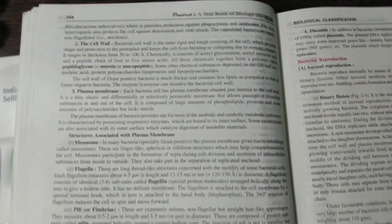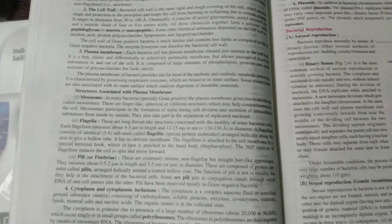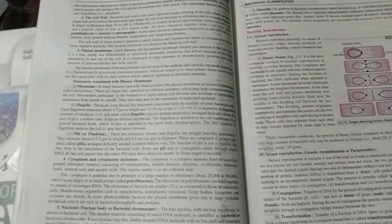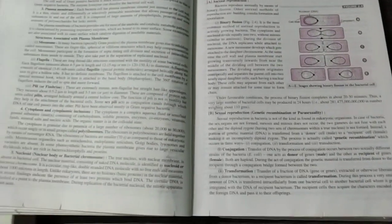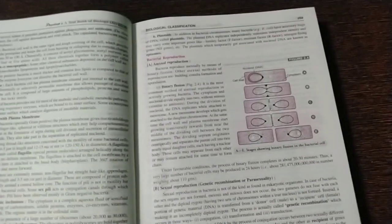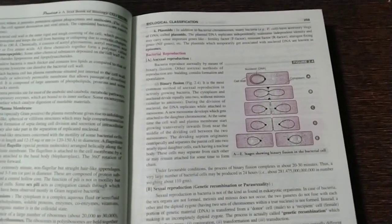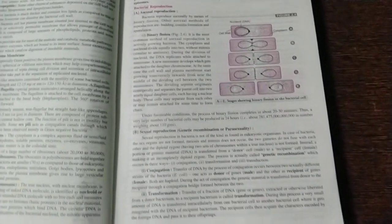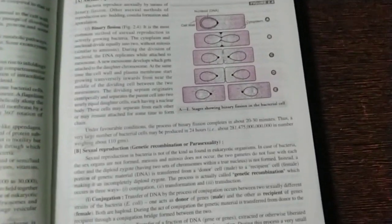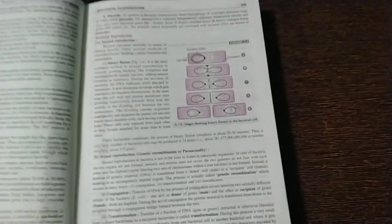This is the cell wall, plasma membrane, mesosome, flagella. You can mug up one, two, or you can understand. But you need to learn everything, because any line can be the question. So yeah, next comes bacterial reproduction, binary fission, sexual reproduction, everything is given very nicely with the help of diagrams. It is all good.